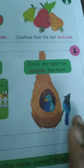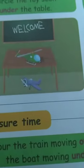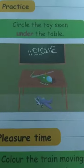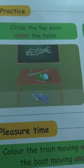Okay, next — circle the toy under the table. What does 'under' mean? Under means down, that means below. So 'under' means down, below.